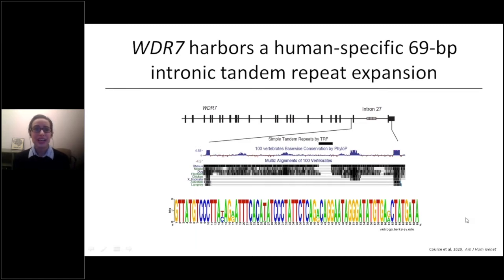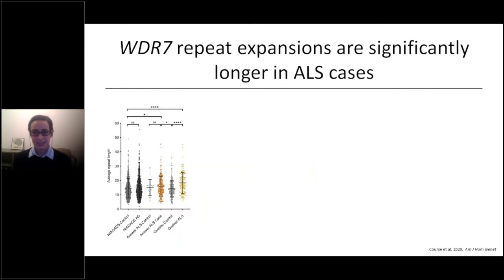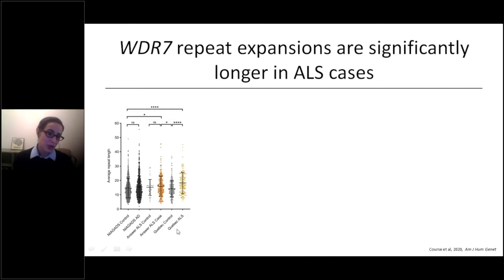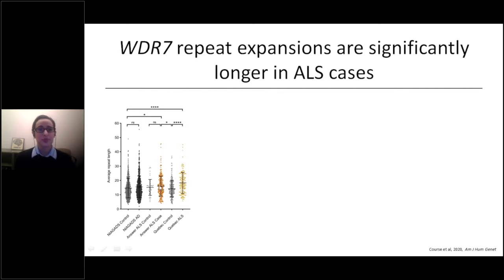We wanted to know if this repeat is more expanded in cases of sporadic ALS, and we found that it was. First, looking in short-read whole-genome sequencing datasets, for example in a cohort from Quebec, on average the length of this expansion is longer in sporadic ALS cases compared to controls. And again in the Answer ALS database, on average this repeat is expanded longer in cases compared to controls.